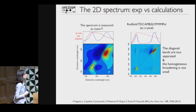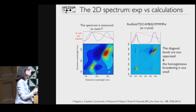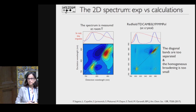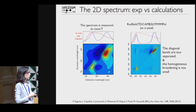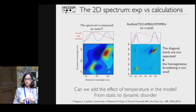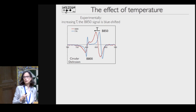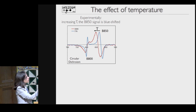Here is our first comparison between experiment and calculation. The experiment, measured by Van Grondel at room temperature, is shown together with our simulation. The result is reasonable but misses important features: the diagonal bands are too separated and the homogeneous broadening is too small. What we are missing is the effect of temperature—the effect of disorder—which is very important in proteins. Circular dichroism shows that something more than broadening appears with increasing temperature: a shift of the couplet at B850, meaning the excitonic states have been modified by disorder.